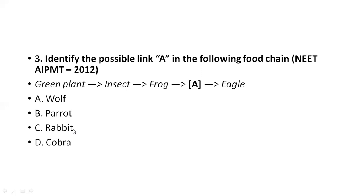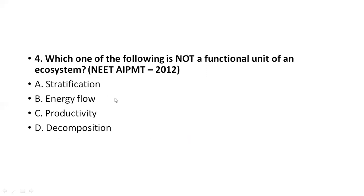While answering the question, please keep in mind whether you are selecting the correct option related to the question. Next question: which one of the following is not a functional unit of the ecosystem? The correct answer is stratification. Stratification means differentiation, and it is not a functional unit of the ecosystem. Energy flow, productivity, and decomposition are all units of ecosystem — except stratification.